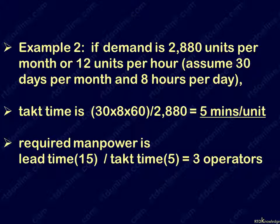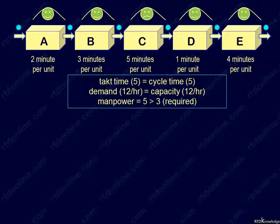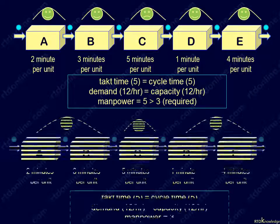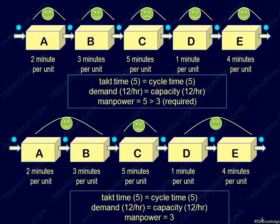Let's take another case. Suppose demand is only 2,880 per month or 12 per hour. Our TAC time becomes 5 minutes. Since our lead time is 15, then the required manpower is 3. Note that though our process can achieve the TAC time of 5 minutes and the required capacity of 12 per hour with 5 operators, it would be overstaffed by 2. To right-size and achieve the required capacity and TAC time, we assign only 3 operators, so that each gets exactly a 5-minute cycle time.